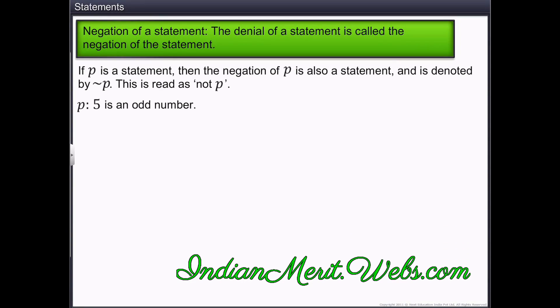The negation of P is either, it is not the case that 5 is an odd number or it is false that 5 is an odd number. In other words, it can be written as, 5 is not an odd number.